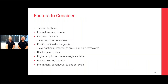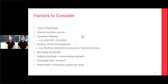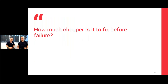Factors to consider when assessing severity: the type of discharge — internal, surface, or corona; the type of insulation — porcelain, polymeric, paper, or XLPE; the position of the discharge site and how close it is to a phase or earth conductor; the amplitude — very relevant for cable PD and TEV, less so for trending with ultrasonic; whether it is intermittent or continuous; and pulse-per-cycle count. All of these go towards engineering judgment on the discharge site being tracked.